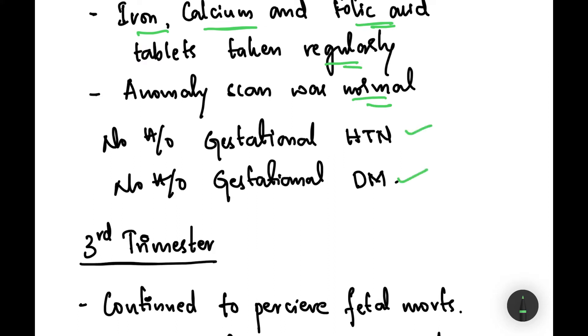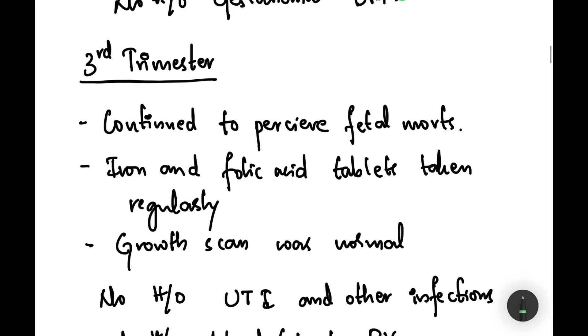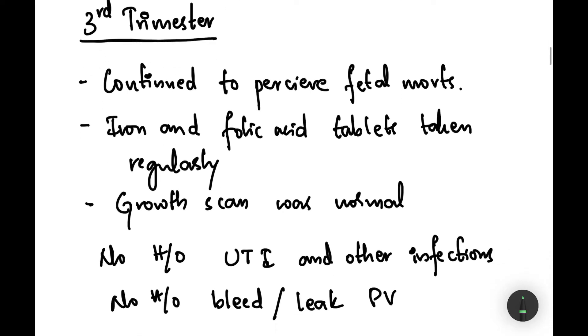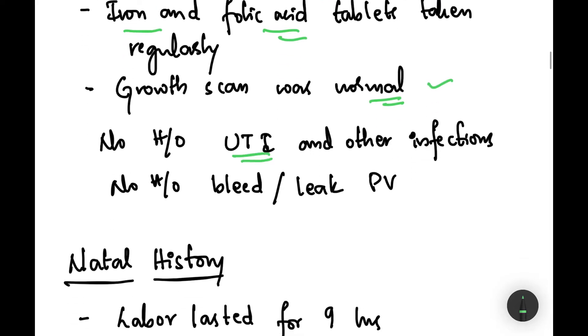Moving on to the third trimester, the mother continued to feel or perceive the fetal movements and iron and folic acid tablets were taken regularly. Growth scan was found to be normal. There was no history of urinary tract infection or other infections and there was no history of leak or bleed per vaginum.